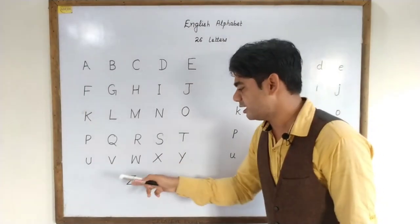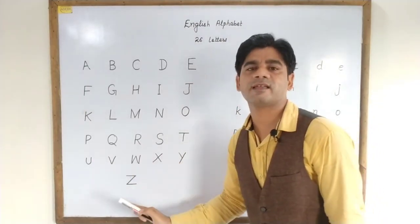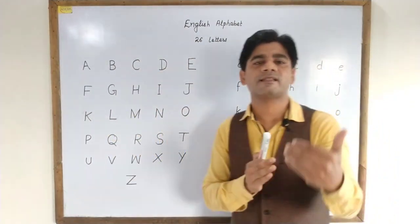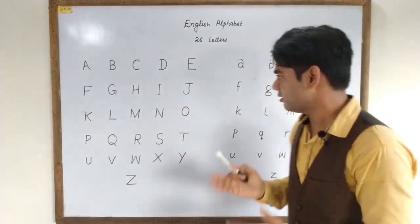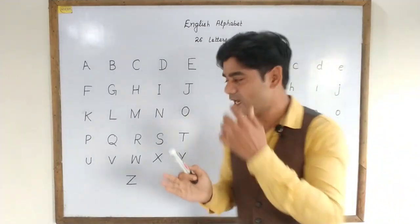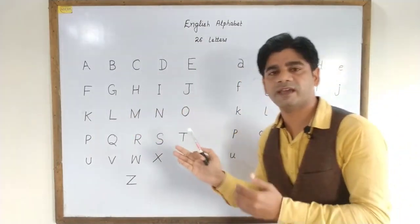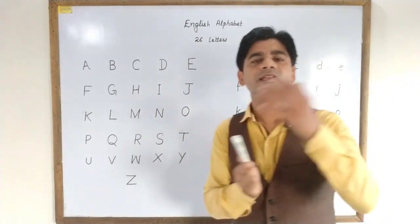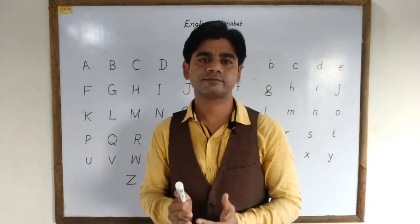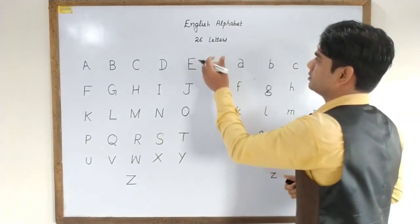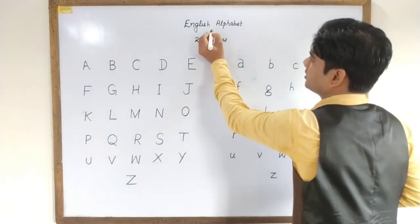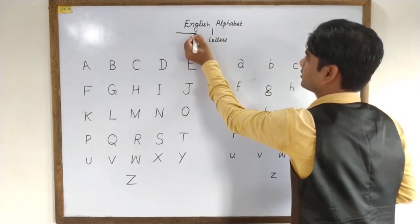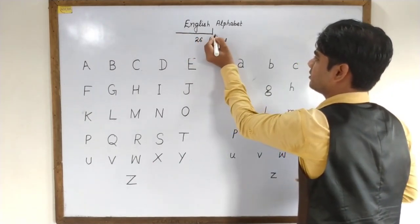In an American accent this letter is pronounced 'Z', whereas in an Indian accent this is pronounced as 'Zed'. So now we have learned pronouncing these English letters in an American accent or an Indian accent. Now we are moving towards the next point — the English alphabet is divided into two parts.